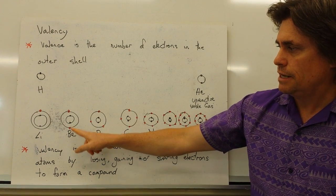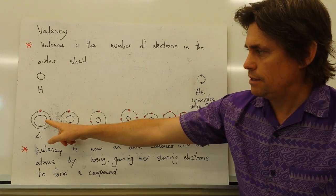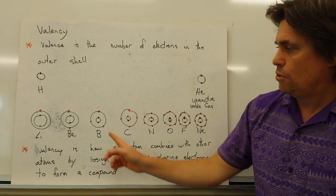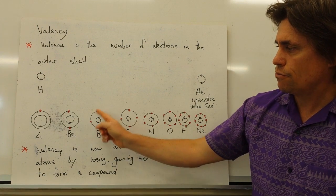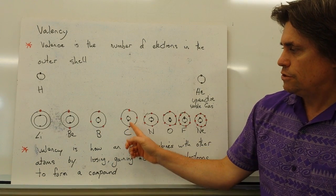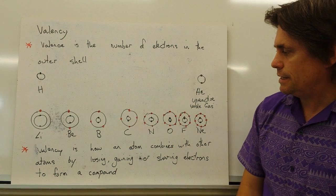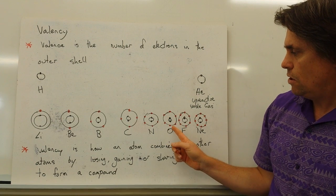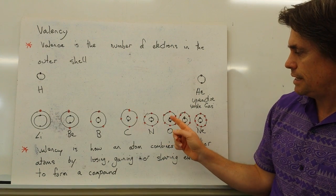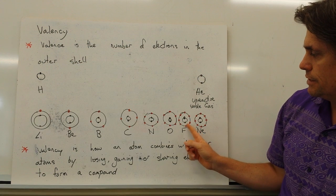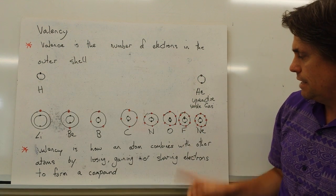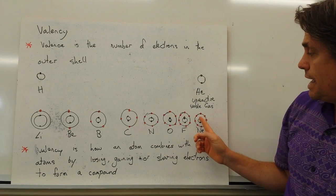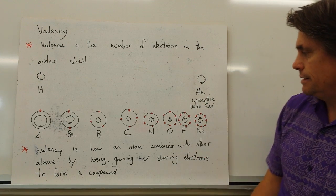Beryllium, our fourth element, has two in the first shell and two in the second shell. Boron has two in the first and three in the second. Carbon has two in the first and four in the second. Nitrogen: two in the first, five in the second. Oxygen: two in the first, six in the second. Fluorine: two in the first, seven in the second shell. And neon, once again an unreactive noble gas, has two in the first and eight in the second shell.